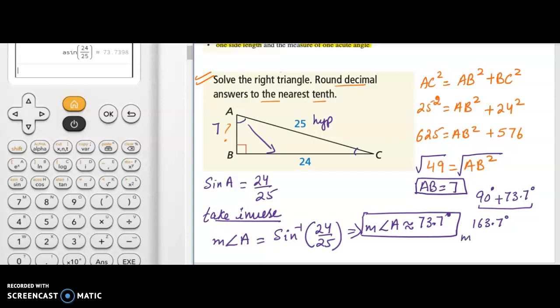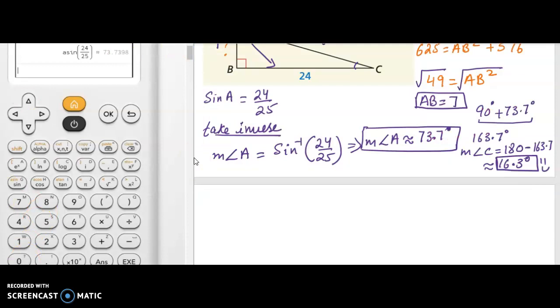And to find angle C, I can just say measurement of angle C is nothing but 180 minus 163.7. And that will give you your lovely answer as 16.3 degrees. That is what we are looking for as the final answer. So we just found out the whole entire triangle, the missing lengths and everything. So let's write it down neatly what we got. We got segment length AB as 7 units. And then we got measurement of angle A as approximately 73.7 degrees. And finally, measurement of angle C, which is 16.3 degrees.